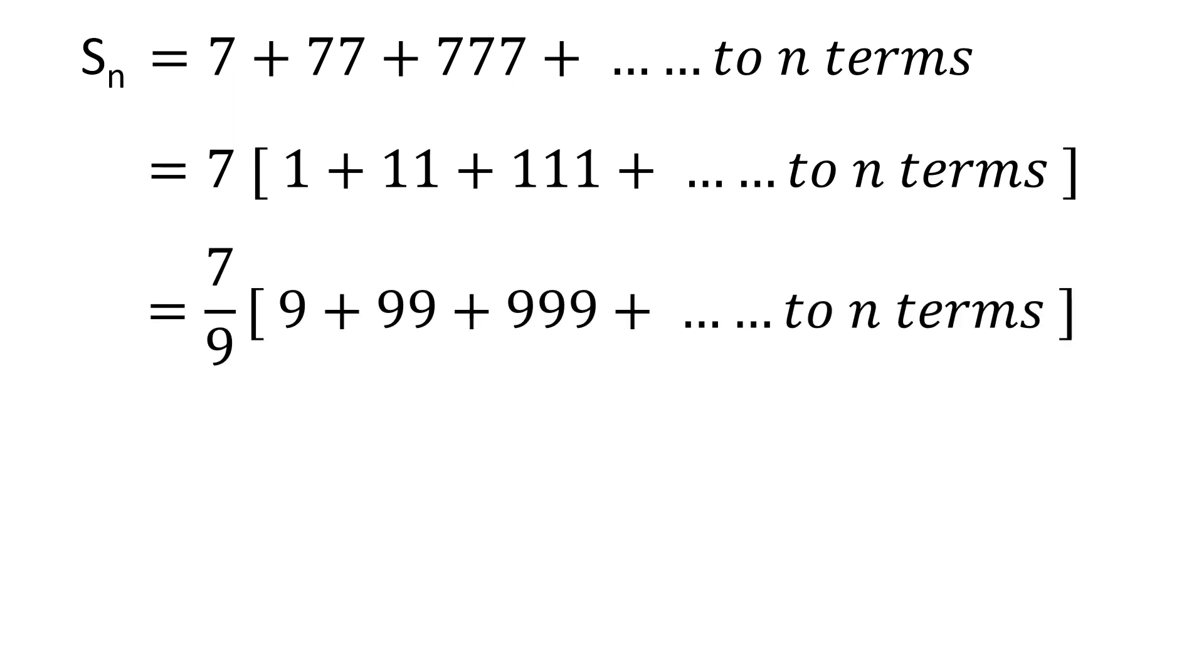Let's multiply each term in the square brackets with 9 and divide the whole series by 9. Since we have multiplied as well as divided the whole series by 9, it does not affect the sum of the series.